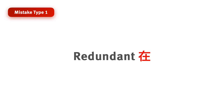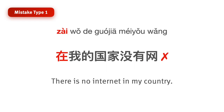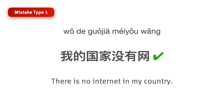The first type of problem is redundant 在. That means sometimes a student may add a 在 when it's not really needed. For example, consider this sentence: 在我的国家没有网. Here the 在 is redundant. We should really get rid of it and say 我的国家没有网.